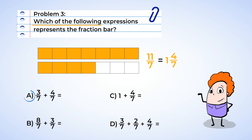Part A: three-sevenths plus four-sevenths would give a total sum of seven-sevenths. That's not eleven-sevenths, so Part A is not a correct answer. Moving on to B: eight-sevenths plus three-sevenths is equal to eleven-sevenths. That's how many are shaded for the fraction bar, so B is a correct answer. Part C has one plus four-sevenths. This means that there's a whole shaded, or seven-sevenths, and an additional four-sevenths, giving us the mixed number one and four-sevenths. C is also a correct answer.